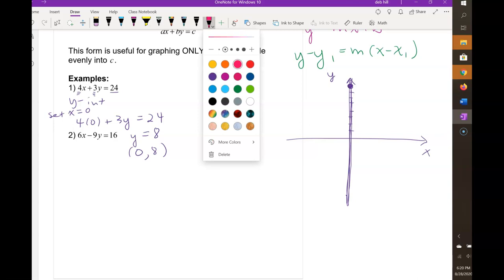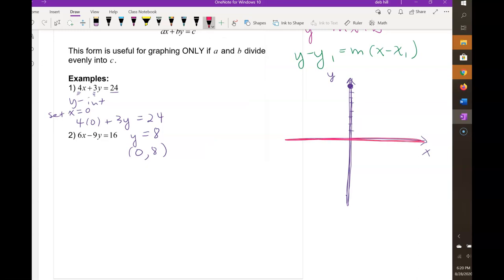Then we want to find the x-intercept, and the x-intercept is on the x-axis. If you want to find the x-intercept, you set y equal to 0. So you'll have 4x plus 3 times 0 equals 24, and you can see that x is 6. So 6 comma 0 is our x-intercept, and then you draw the line that connects those two points.